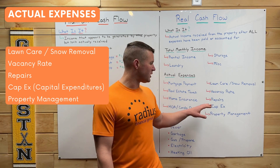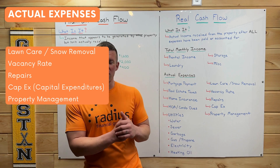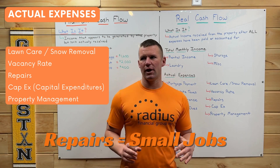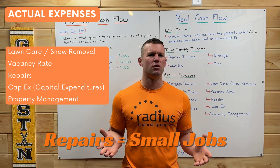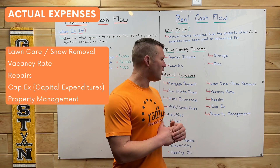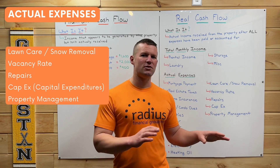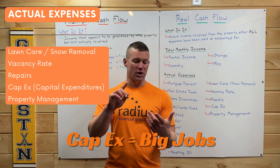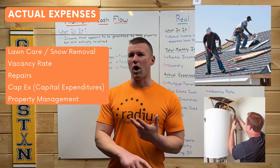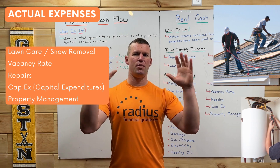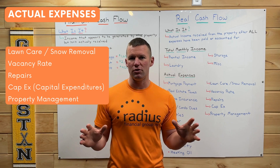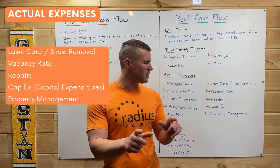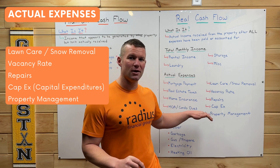The next two are big: repairs and CapEx — capital expenditures. Repairs are pretty straightforward, things like holes in walls. You might budget around $50 to $100 per month per unit for repairs. CapEx is for big projects down the line — new roofs, water heaters, things like that. Think of CapEx as the big projects you won't run into month to month but might face every two to five years. It's very important to know the difference and account for both.